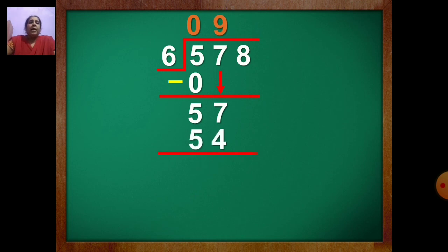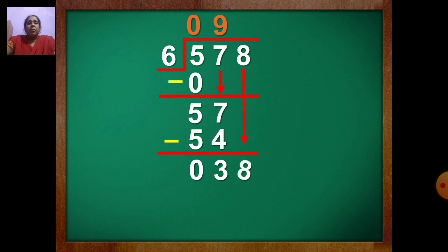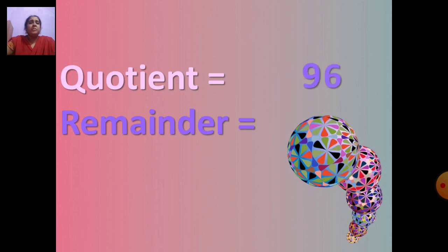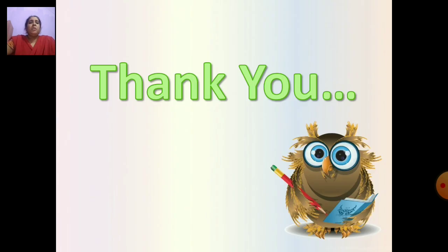Draw the line and start subtracting from the first place. 7 minus 4 is 3, 5 minus 5 is 0. Now bring 8 down — you have 38. Again say table of 6. Which number less than 38 comes in table of 6? 36. Write 6 up, 36 down. Draw the line, put the sign of minus. 8 minus 6 is 2, 3 minus 3 is 0. Now write the quotient. What is the quotient here? 96. And remainder? 2. Very good. So children, practice these sums at home. Thank you.